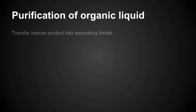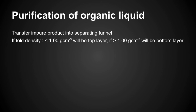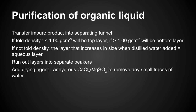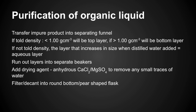Purification of an organic liquid: transfer impure product into a separating funnel. If density < 1 g/cm³ it's the top layer; if > 1 g/cm³ it's the bottom layer. If density is unknown, add distilled water — the layer that grows bigger is the aqueous layer. Run both layers into separate beakers. Add a drying agent (e.g., anhydrous calcium chloride or anhydrous magnesium sulfate) to remove traces of water. Filter or decant into a round-bottomed or pear-shaped flask, then redistil at the boiling point of the organic liquid.